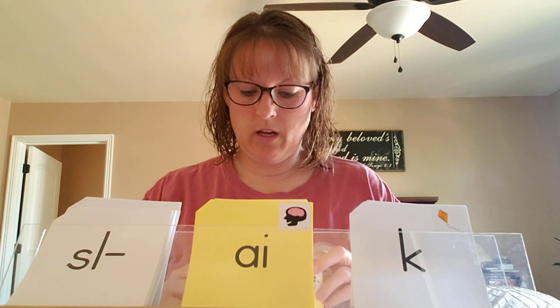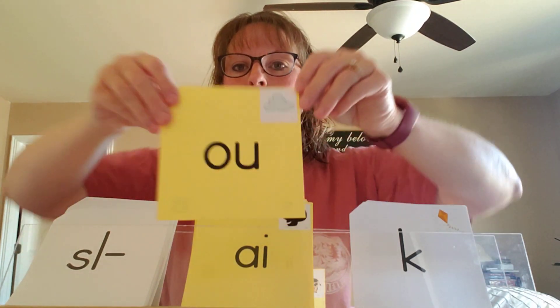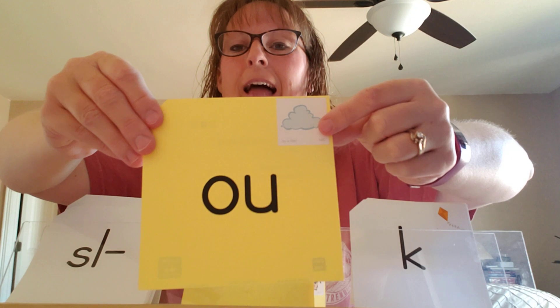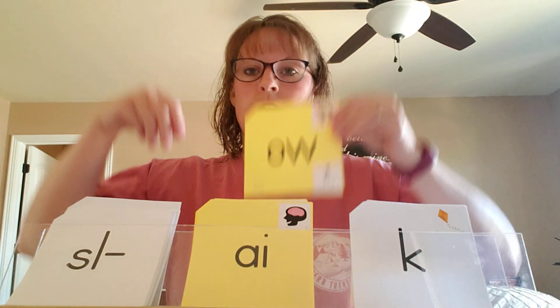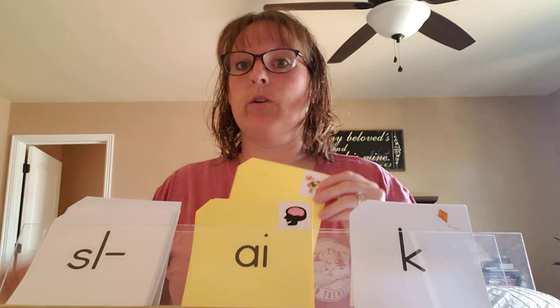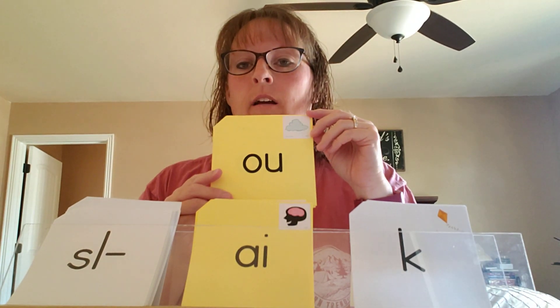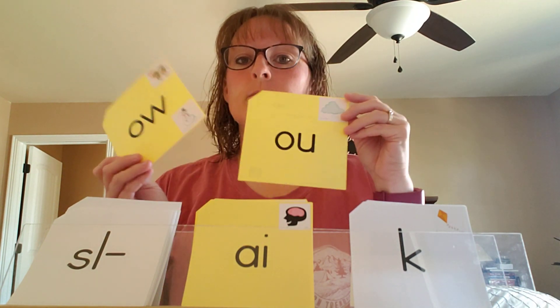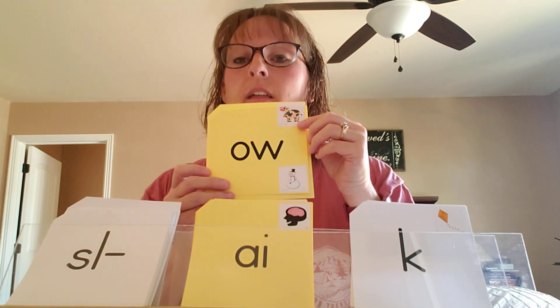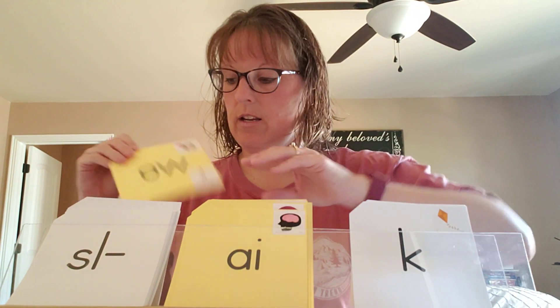We want to add two sounds to the blending board for this week — sounds that we learned last week. We learned that OU says 'ow' like in cloud, and we also learned that OW says 'ow' like in cow. So just to review real quick: OU says 'ow' at the beginning or in the middle of a word, and OW says 'ow' at the end of the word or in the middle of a word.